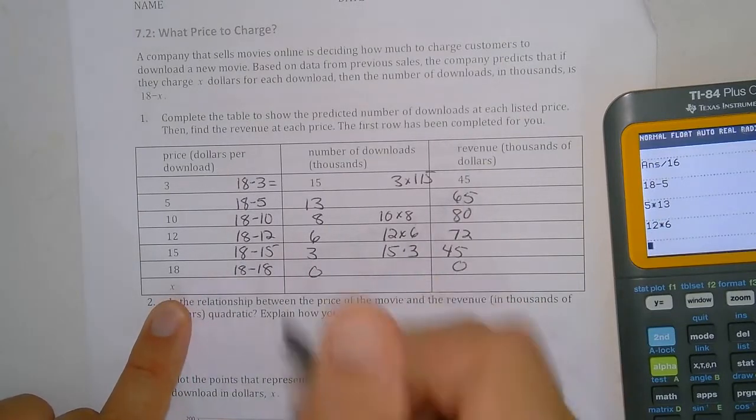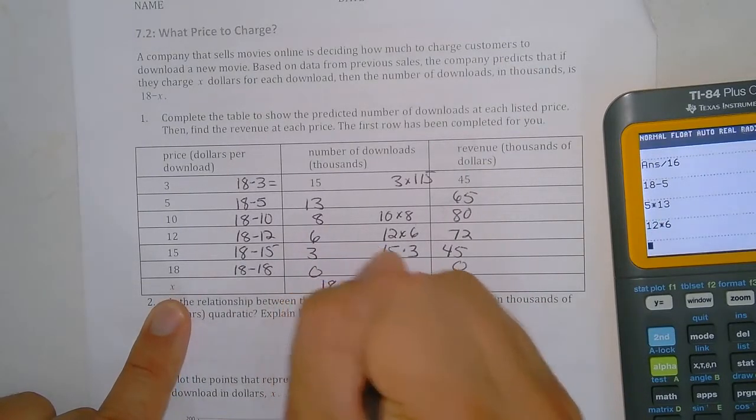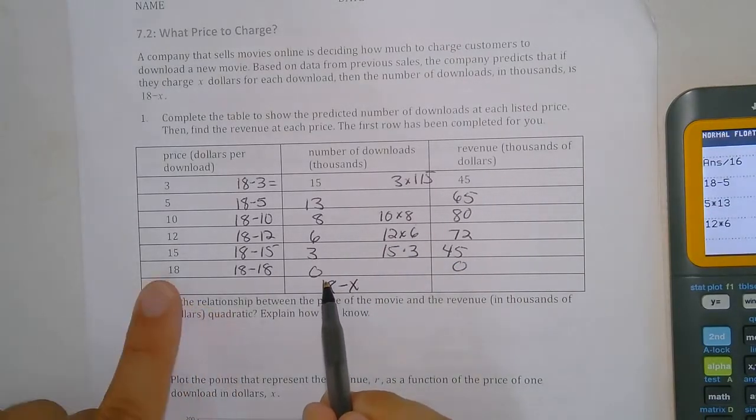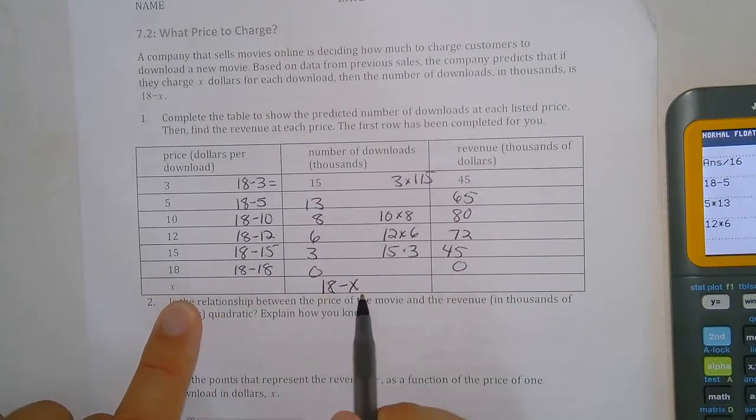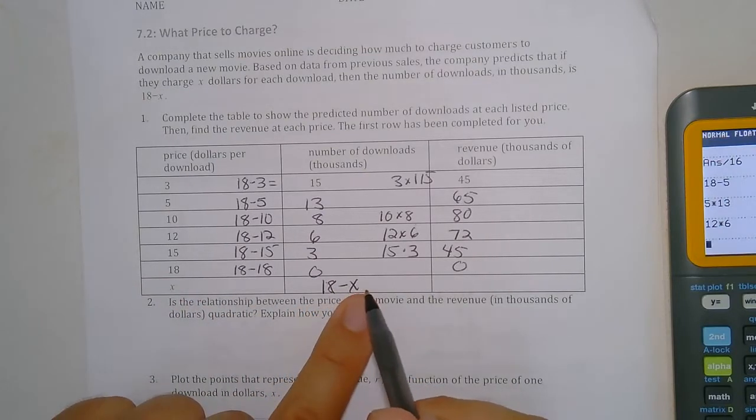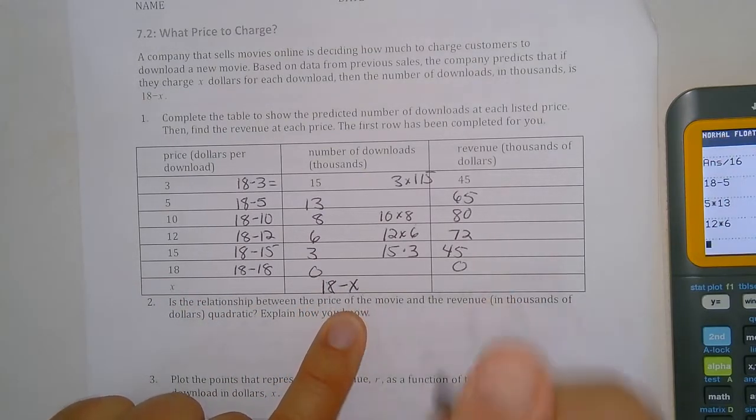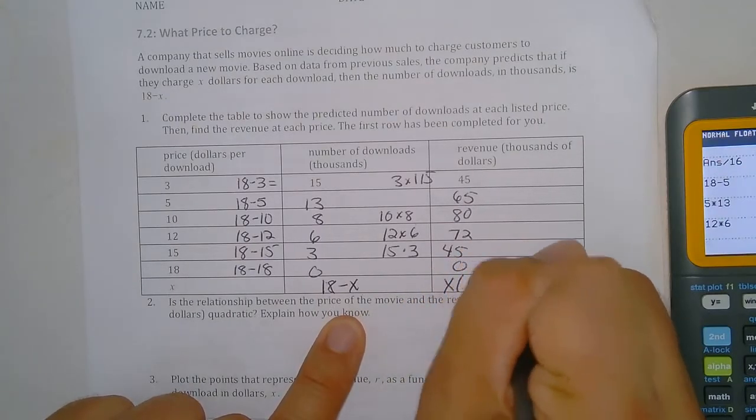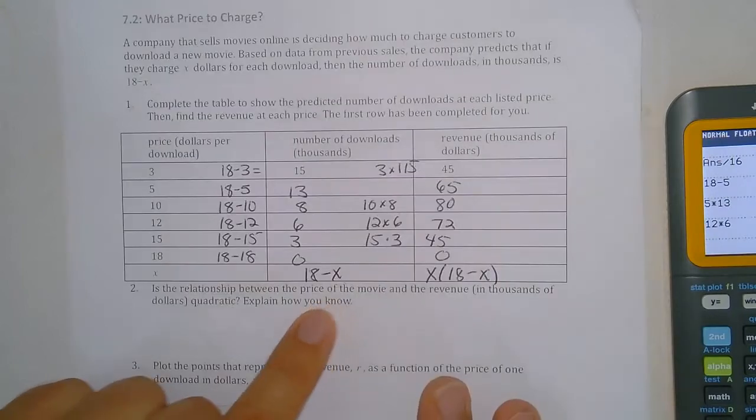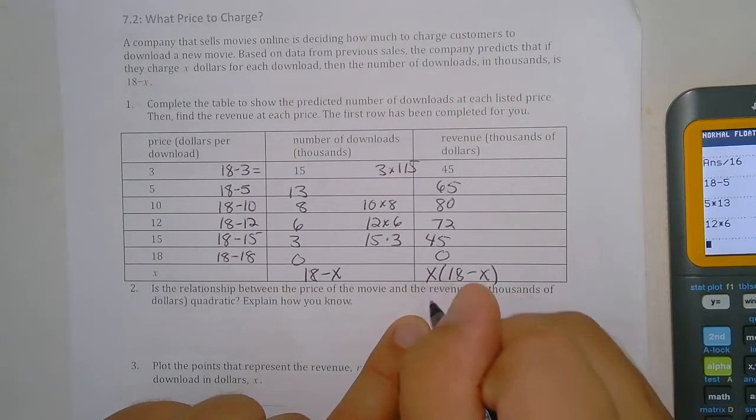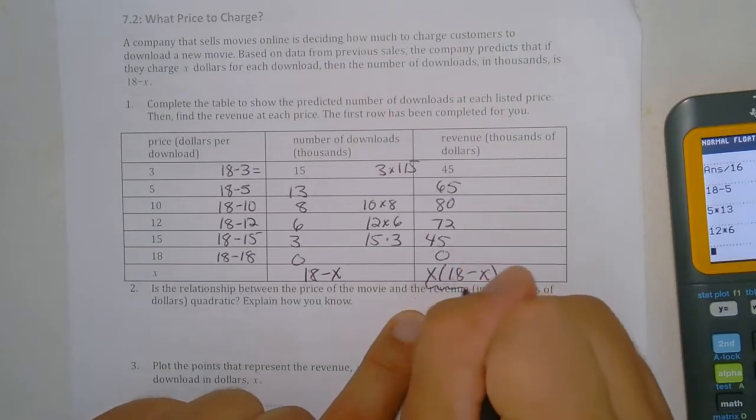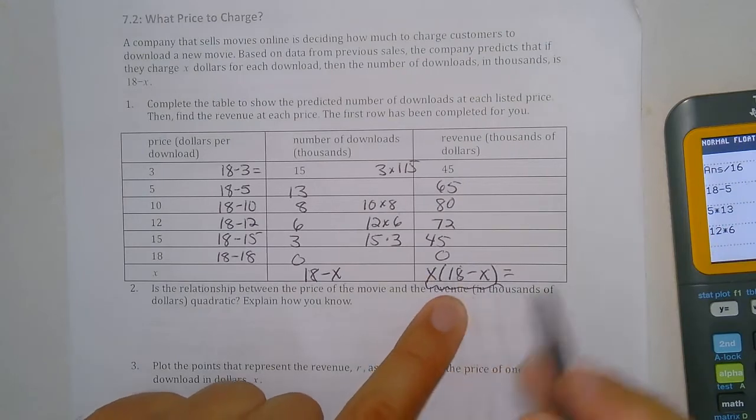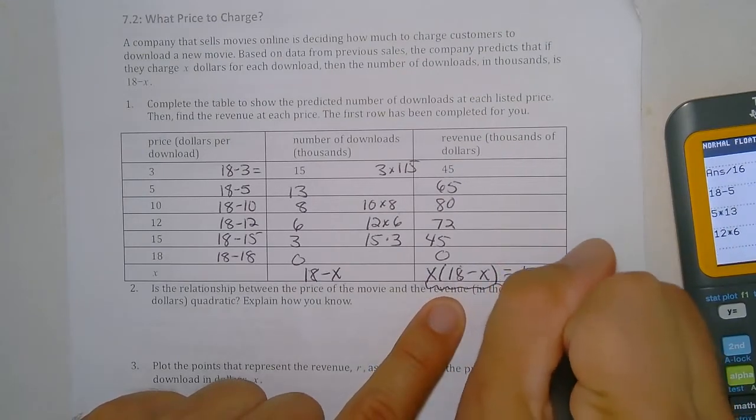So in general, if the price is x, the number of downloads is 18 minus x, and then the revenue we multiply these two things. So I multiply x times 18 minus x. Well, if I'm multiplying x times this whole thing, I need parentheses. So you can go x and then times 18 minus x. And here we could write this, this is going to be what's called factored form, but we can write this with an x squared term by distributing. X times 18 is 18x, and then minus x times x is x squared.